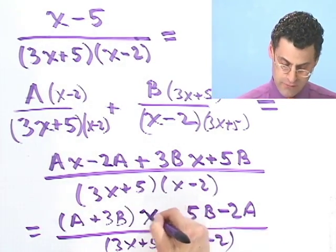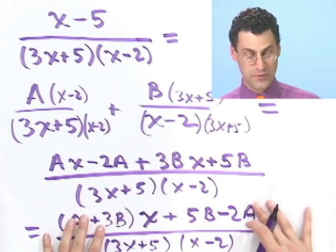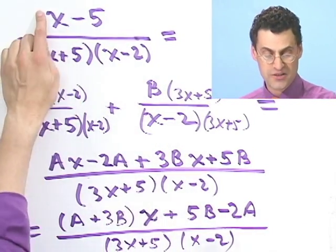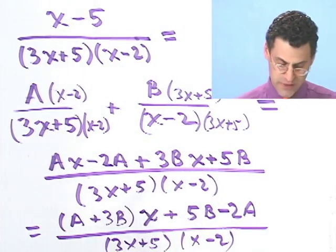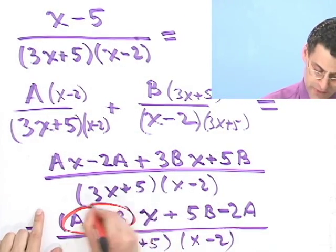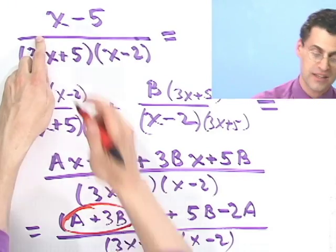OK. So that's what we get when we take these two fractions and add them. But I know what the answer should be. It should be x minus 5. And this is what I have. So what that means is that the thing multiplying the x, that value right there, must be a 1.